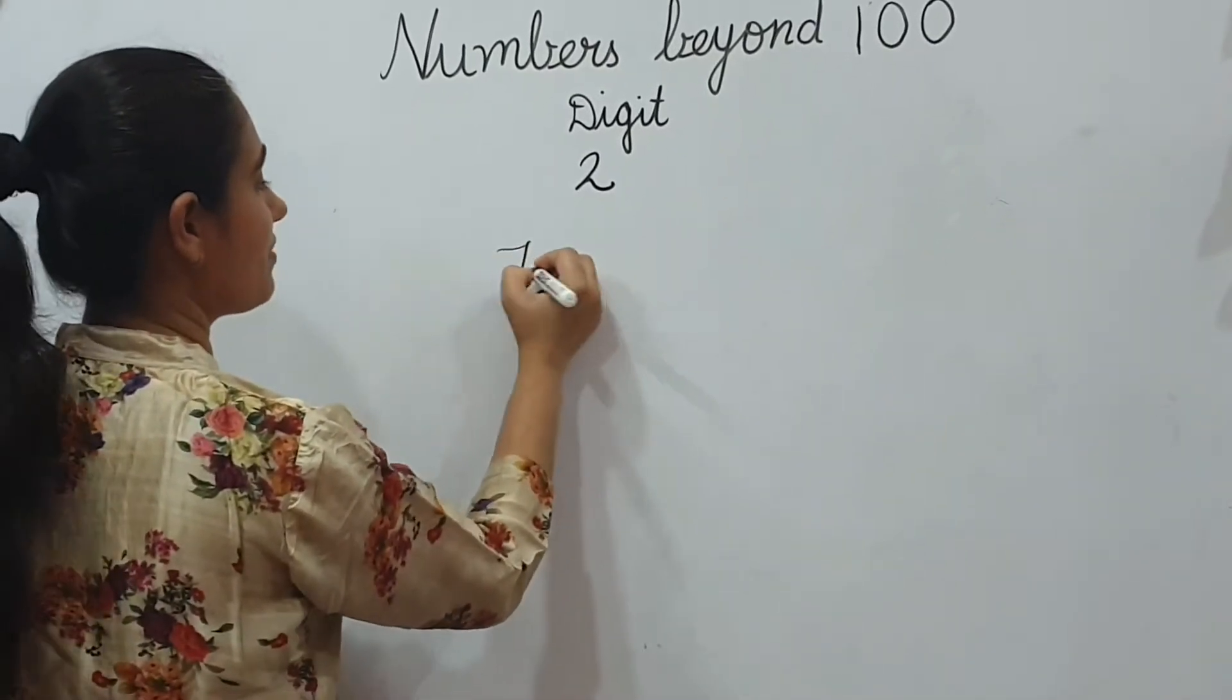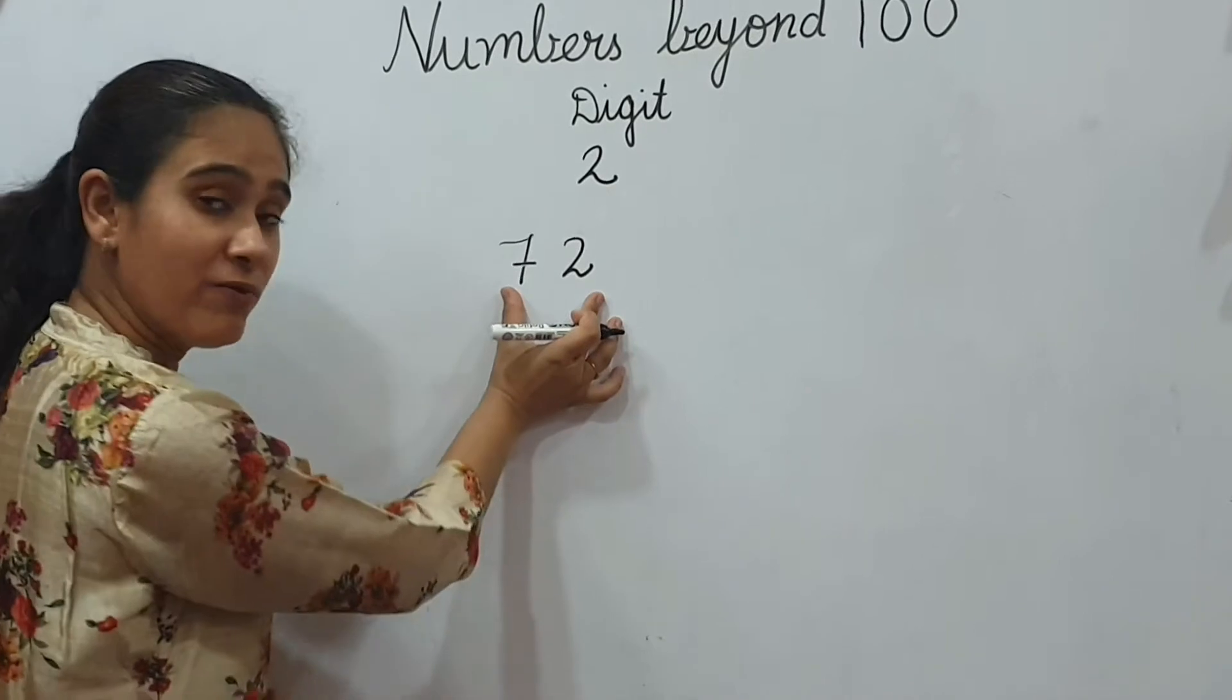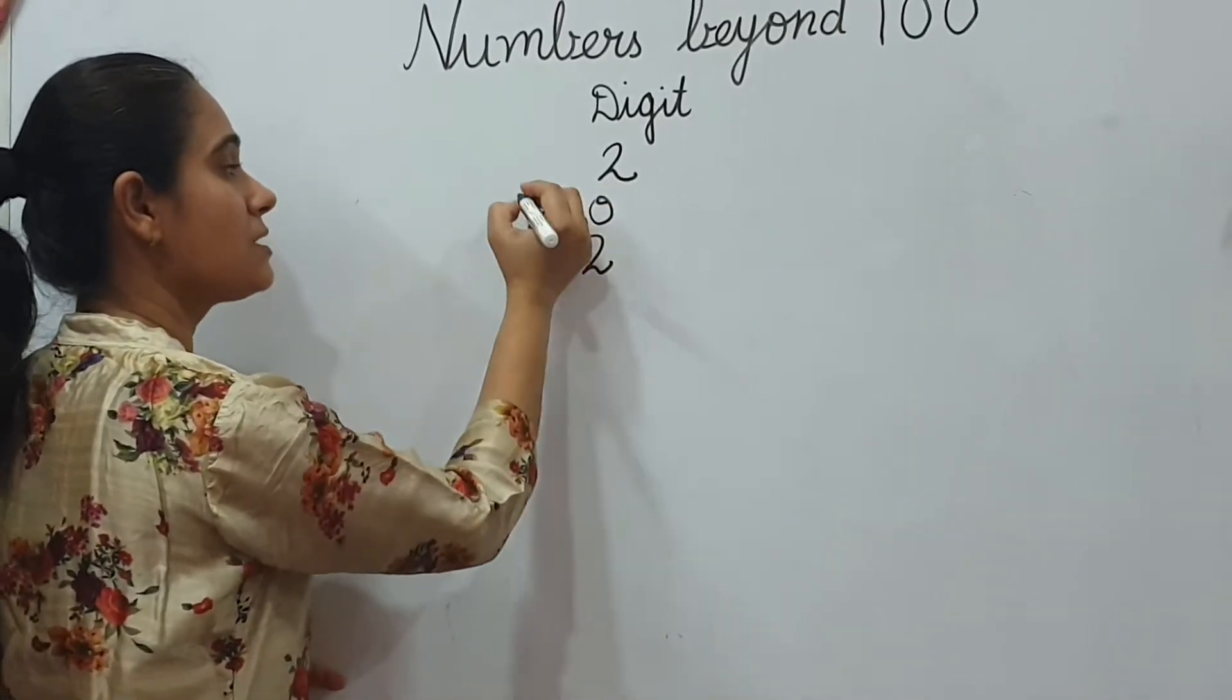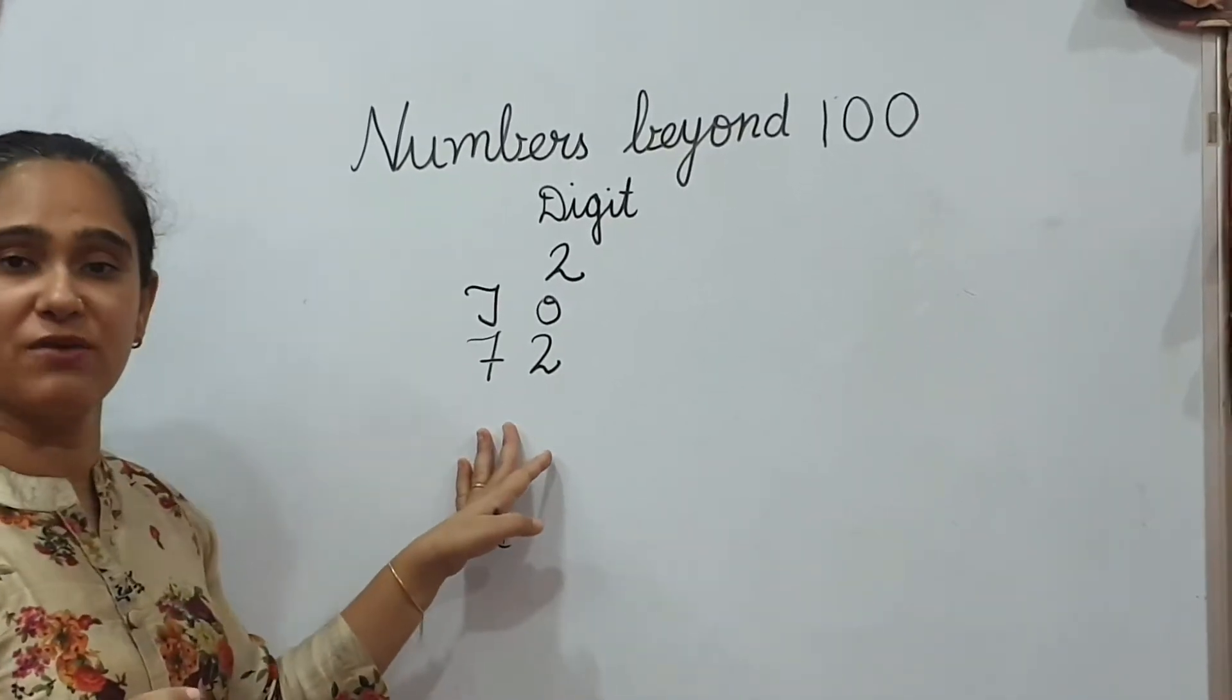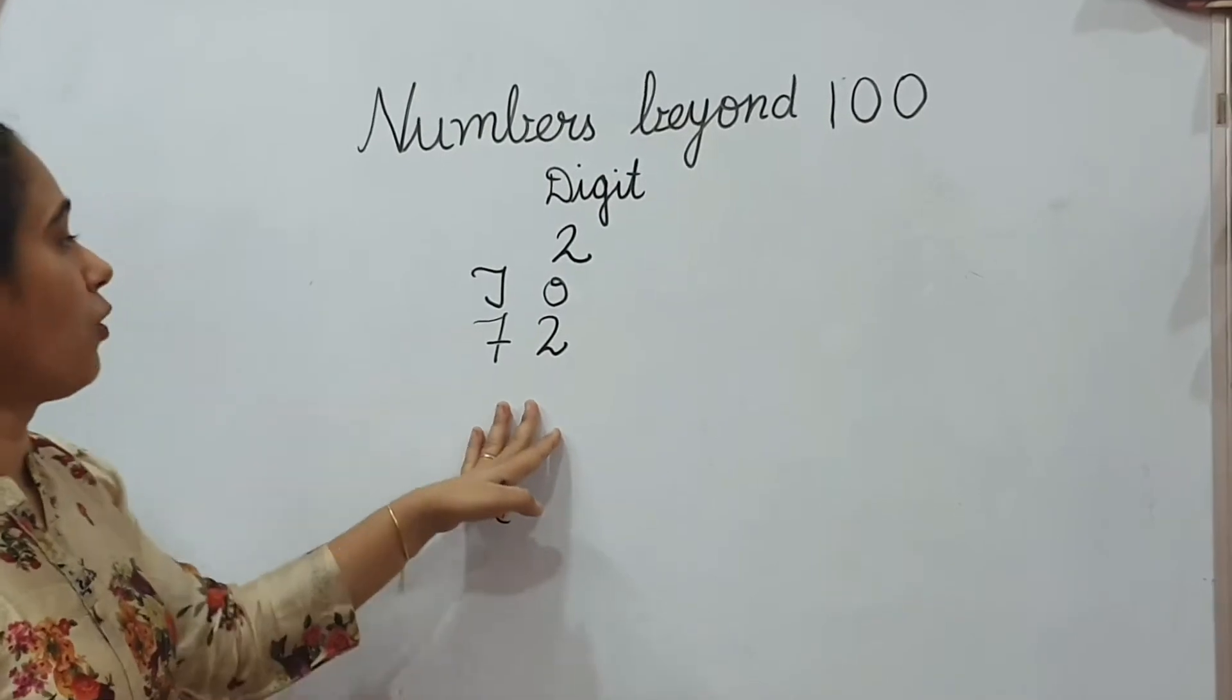Like this, 72. Now, how we will say it? 72. This is at 1's place. This is at 10's place. 72. Now, it becomes number.